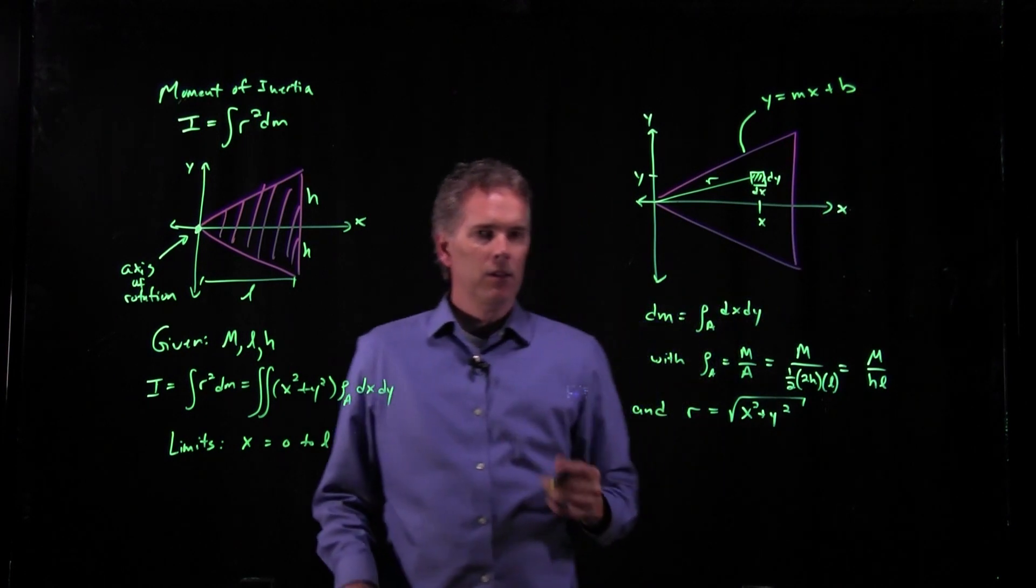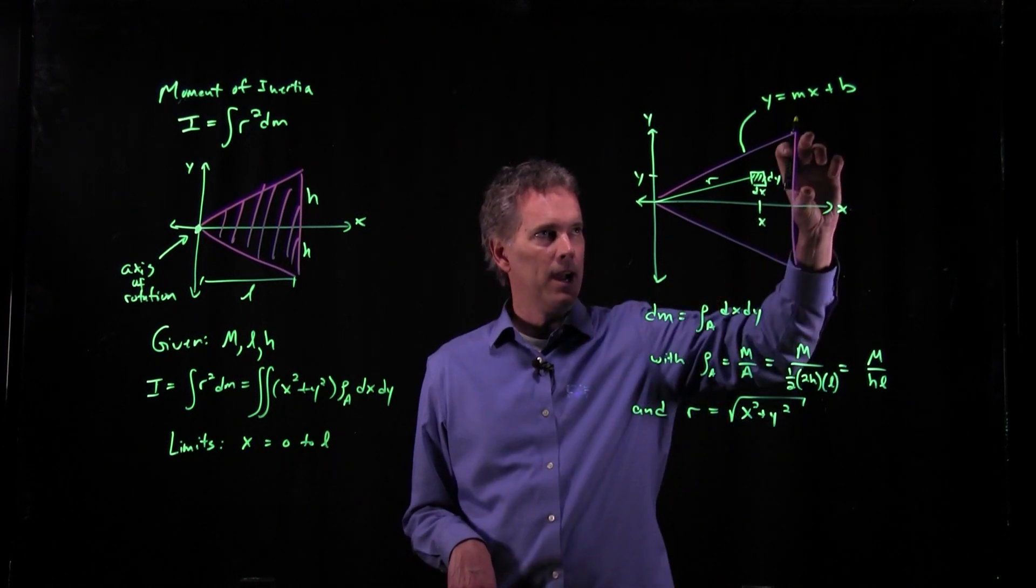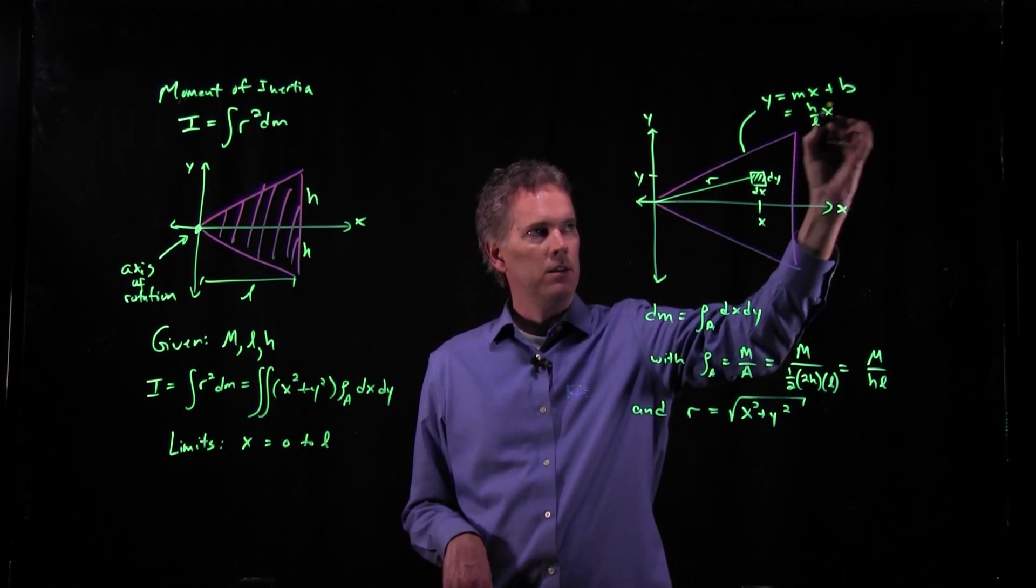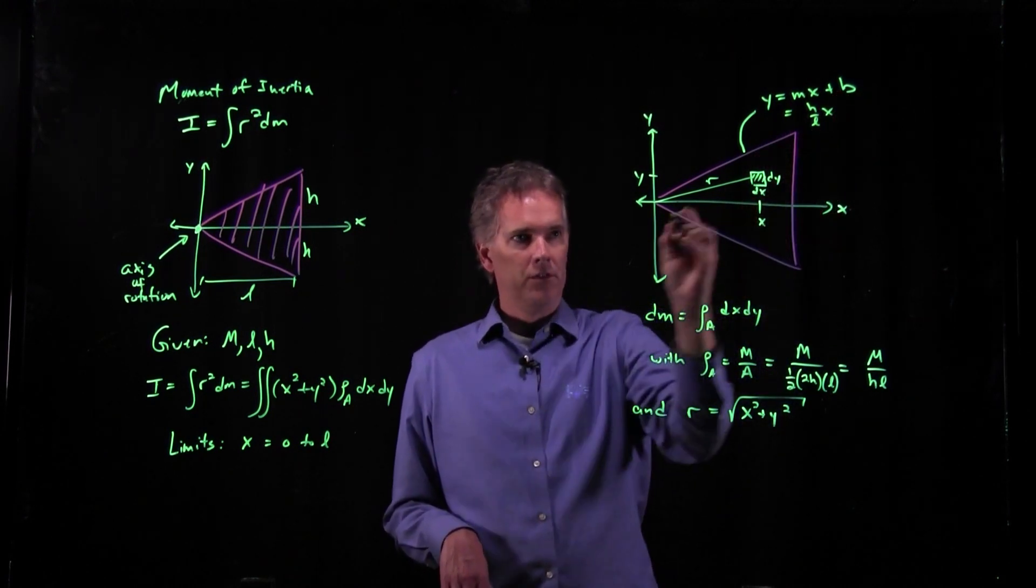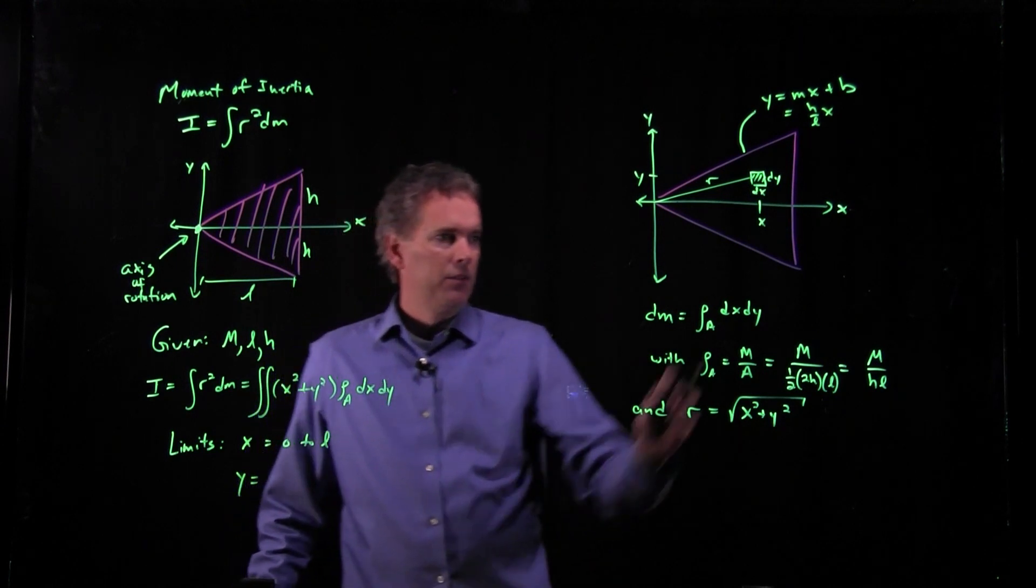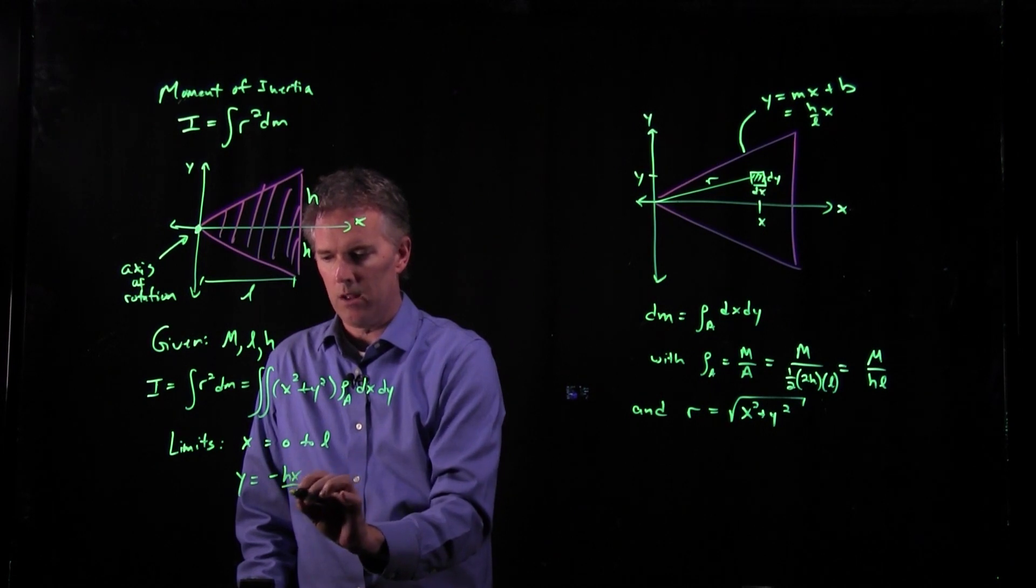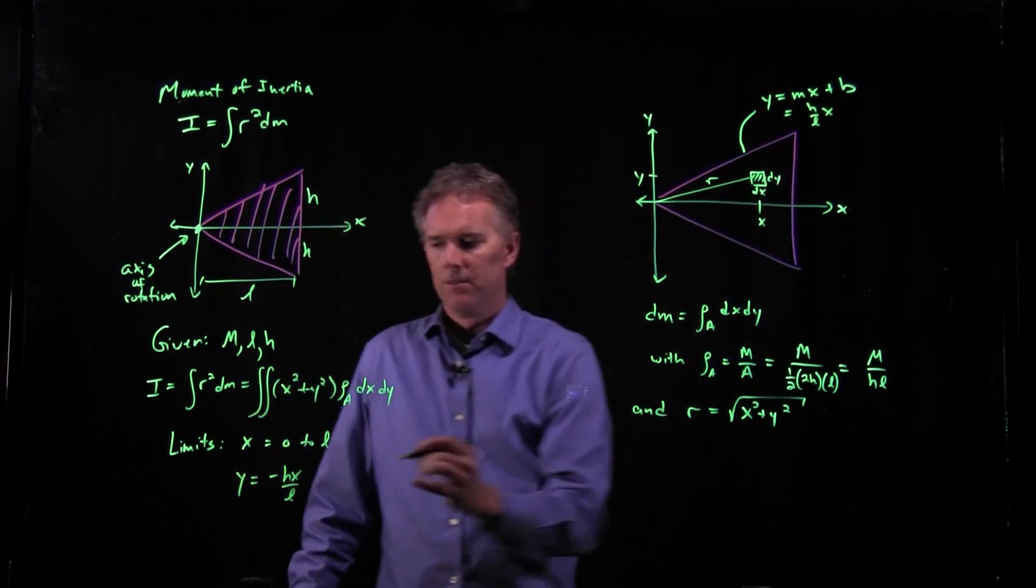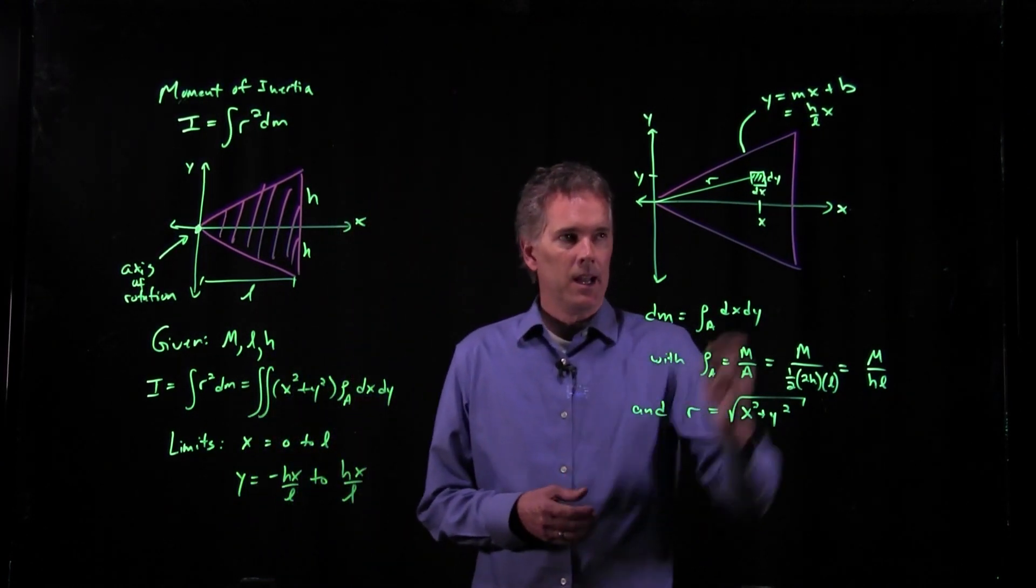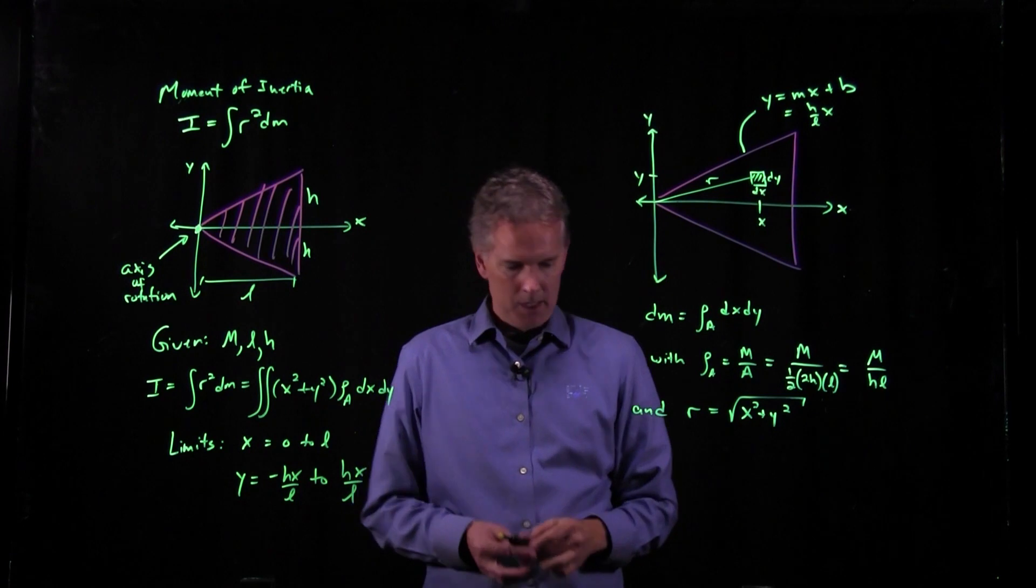Well, we know that the line is slope times x plus intercept. But slope is just the rise, which is h, over the run, which is L, times x. b is of course 0. That's where that line starts. So what are the limits on y in this integral? It's from the bottom line, which is minus hx over L, to the top line, which is positive hx over L. And now as we integrate that dm from there to there, we have to include these limits in our integral.